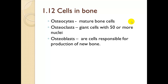Cells in the bones: osteocytes are mature bone cells. Osteoclasts are giant cells with 50 or more nuclei — very large cells. Osteoblasts are cells responsible for the production of new bone. So: osteoblasts produce new bone, osteocytes are mature bone cells, and osteoclasts are the large multinucleated cells.